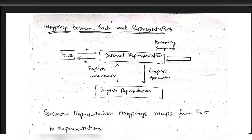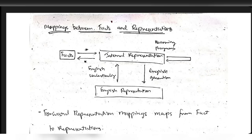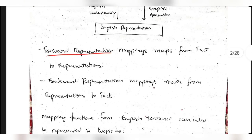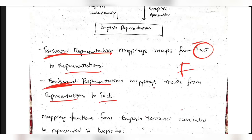In anything around the world, input is there, some process happens, then output is formed - this is what is called mapping between facts and representations. If you have some facts and do some processing on them, you get newer facts. Forward representation maps from facts to representation, and backward representation maps from representation to facts.